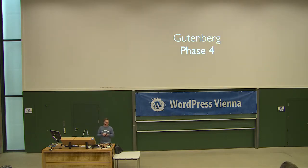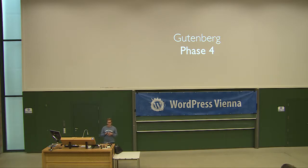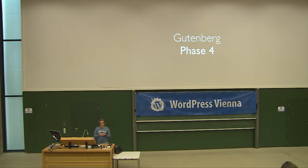During last year's State of the Word keynote by WordPress co-founder Matt Mullenweg, he announced that one of the next phases — phase four of Gutenberg — would focus on developing an official way for WordPress to support multilingual websites. That was a big announcement. No such plans existed in the past, and even now there are no technical details yet for what approach core will take. It's still a long way off.